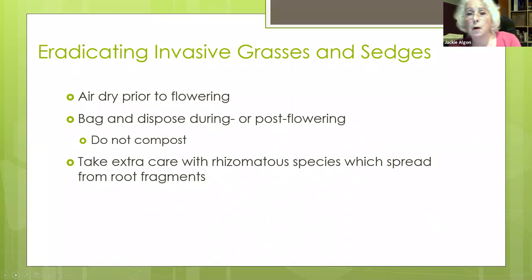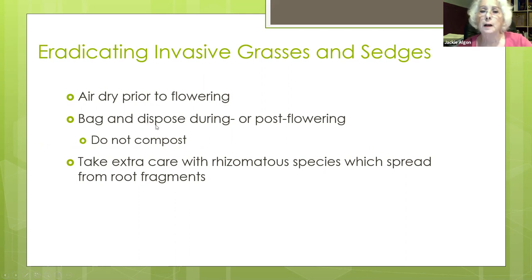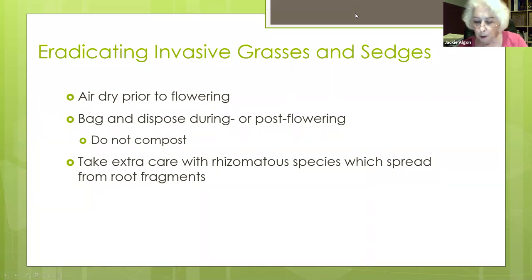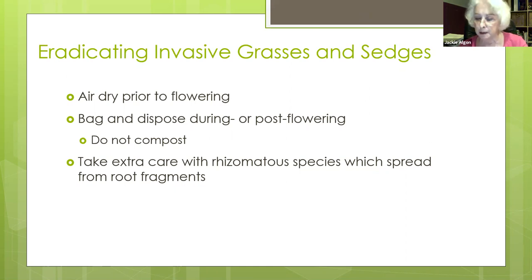You can also eradicate invasive grasses or sedges. Air dry those if not yet flowering, or bag them and dispose. Again, don't put them in your compost. Japanese sedge, yellow iris flag, and any phragmites should be bagged up, because they also travel by rhizomes and can be problems in compost.